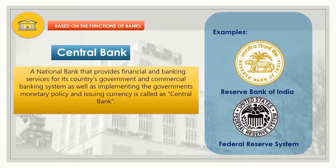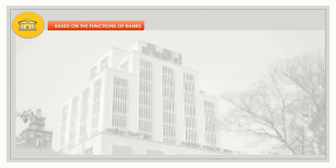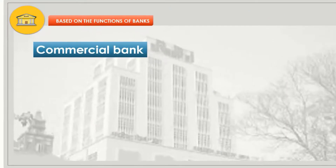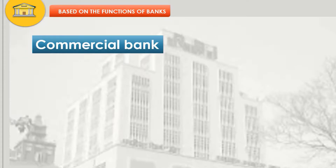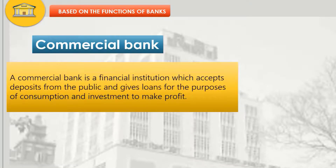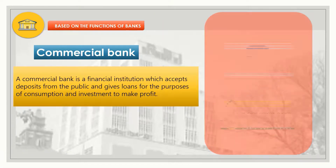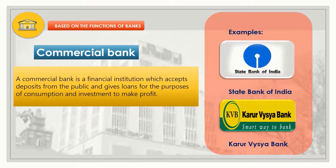The Federal Reserve System is the central bank of the USA. Commercial bank: a commercial bank is a financial institution which accepts deposits from the public and gives loans for the purposes of consumption and investment to make profit. Examples: State Bank of India, Karur Vaishya Bank.